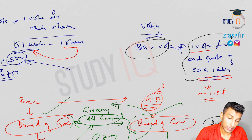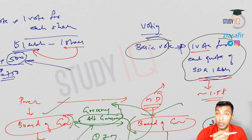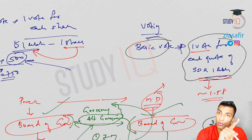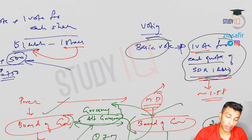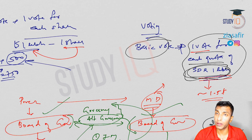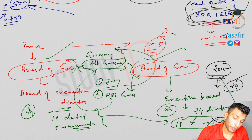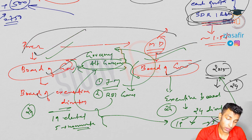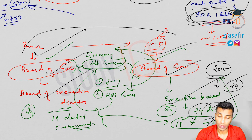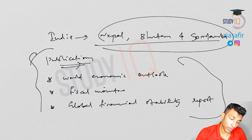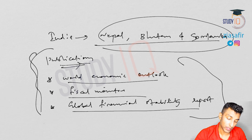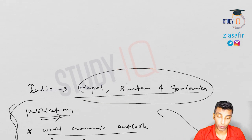Regarding voting: basic vote plus one vote per SDR 1 lakh of quota (versus World Bank's basic vote plus one vote per USD 1 lakh share). The structure is: Managing Director, Board of Governors, Executive Board with 24 elected directors. India represents Nepal, Bhutan, and Sri Lanka. IMF publications are World Economic Outlook, Fiscal Monitor, and Global Financial Stability Report.